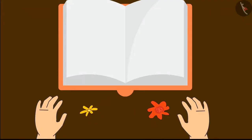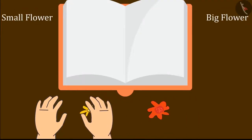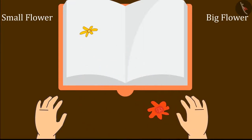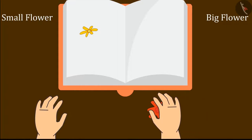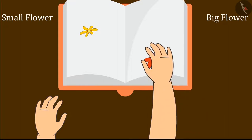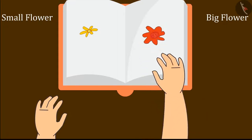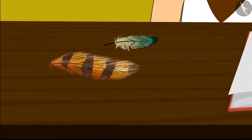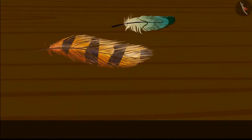Now Chotu thought of pasting the flowers. This little flower, let me put it here. And this big flower here. Now it is the turn of the bird's feathers.